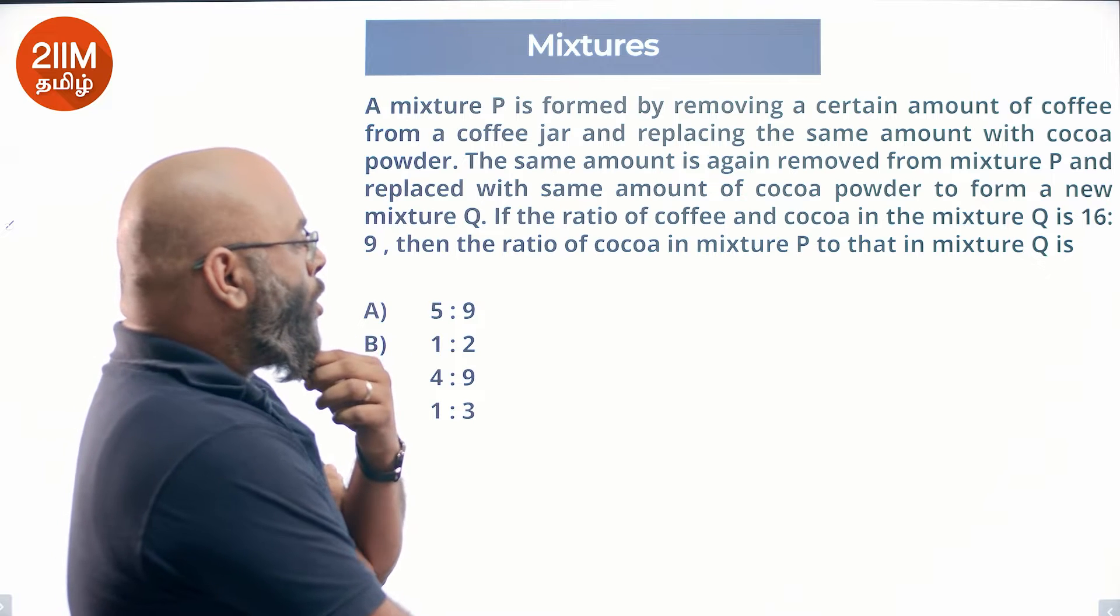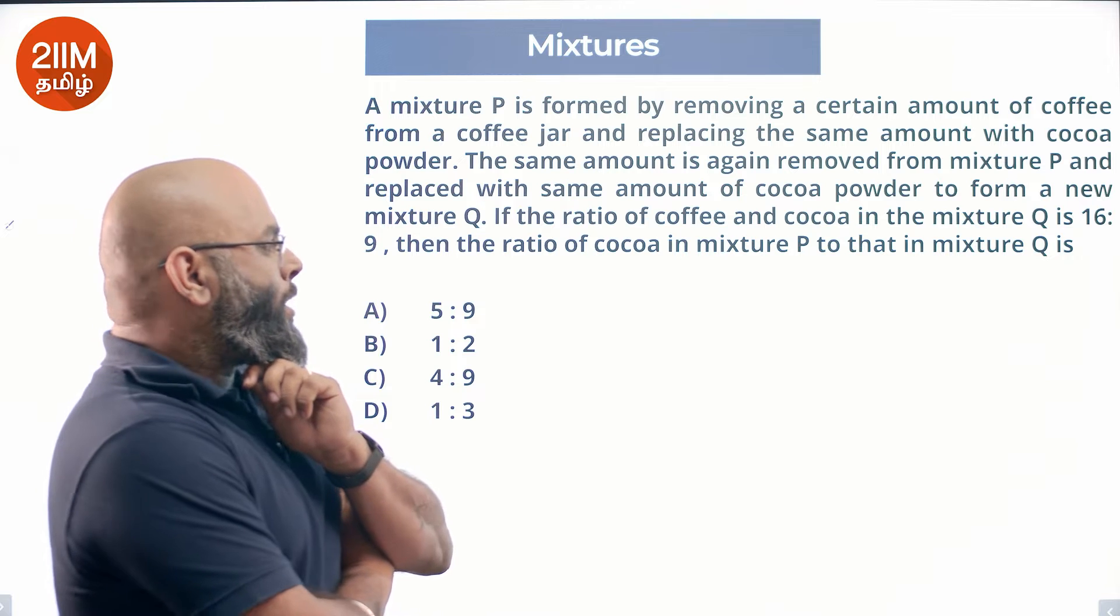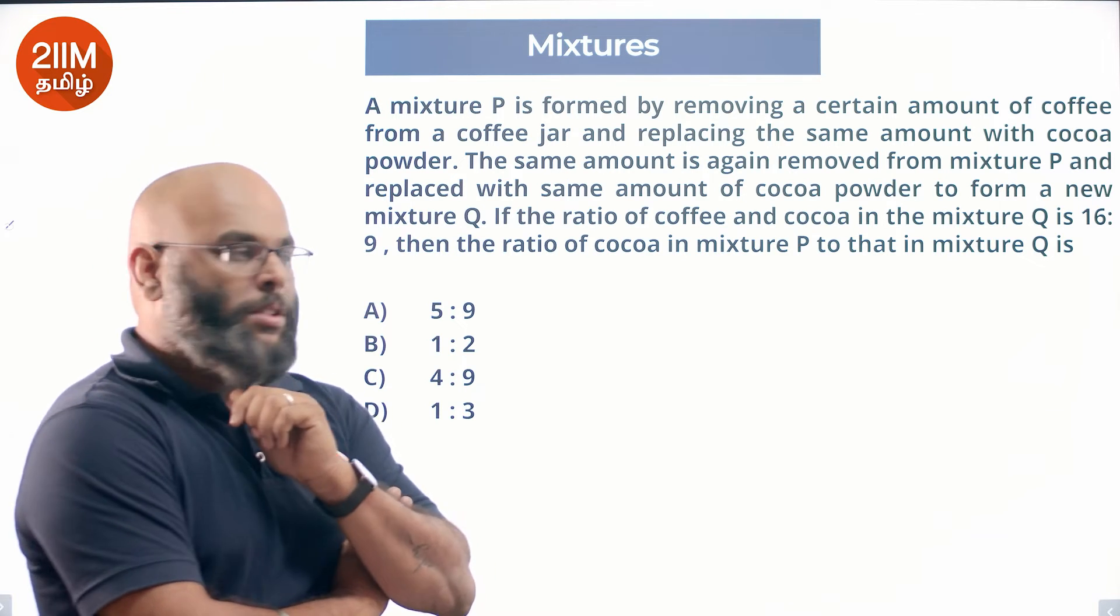If the ratio of coffee and cocoa in the mixture Q is 16 to 9, then the ratio of cocoa in mixture P to that in mixture Q is?